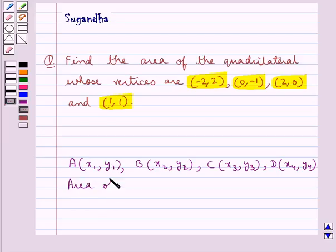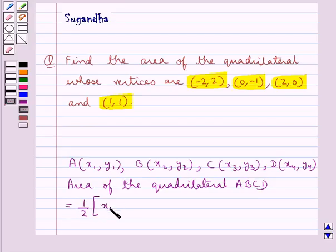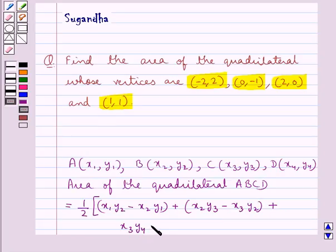Then, area of the quadrilateral ABCD is given by half into [x₁y₂ - x₂y₁ + x₂y₃ - x₃y₂ + x₃y₄ - x₄y₃ + x₄y₁ - x₁y₄], the whole.